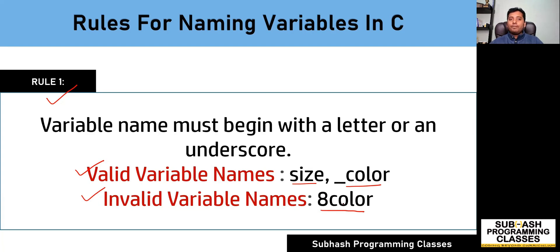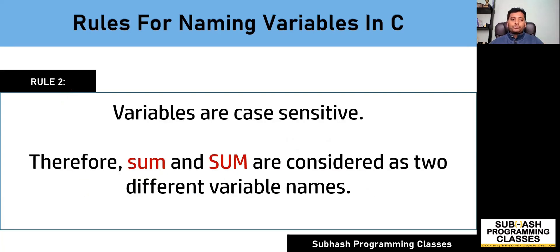Whereas the variable name '8color' is considered as invalid because it starts with a digit. In C language, you cannot start your variable name with a digit — it is not allowed and you will get a compile-time error. So that is why rule number one says variable name must begin with a letter or an underscore.